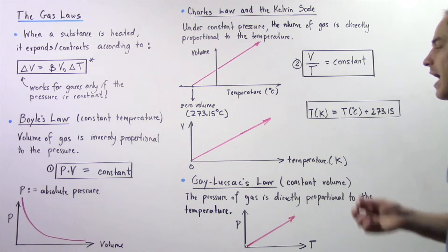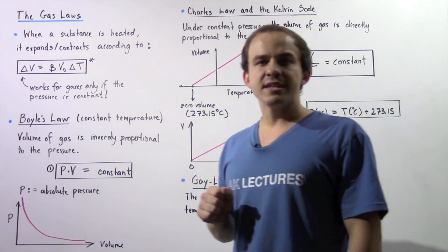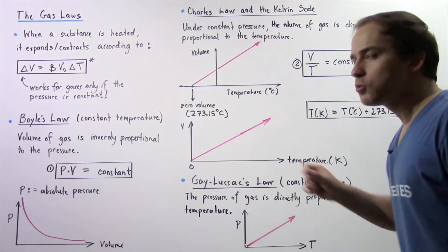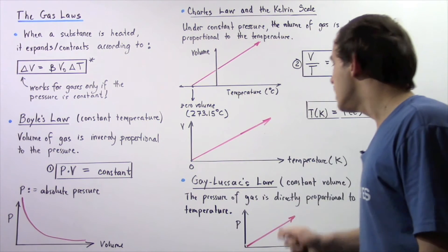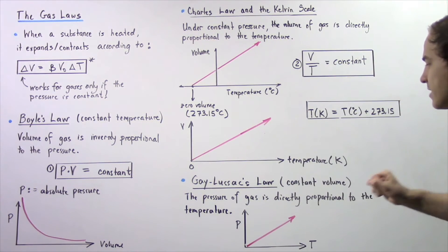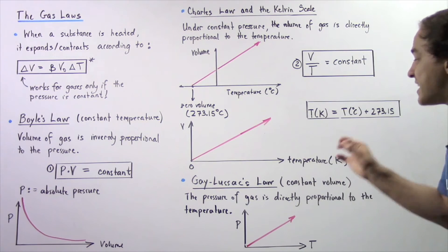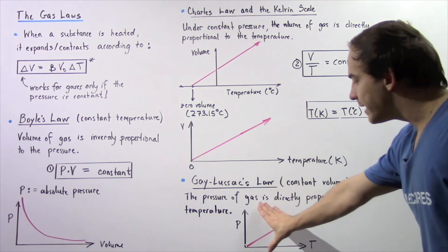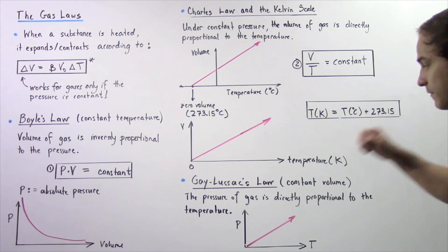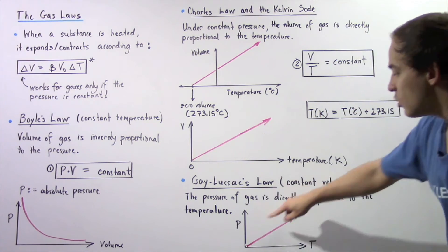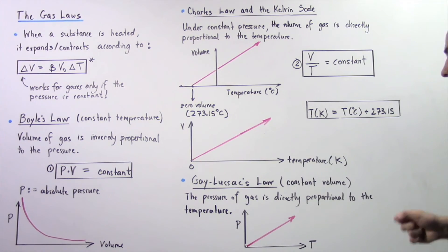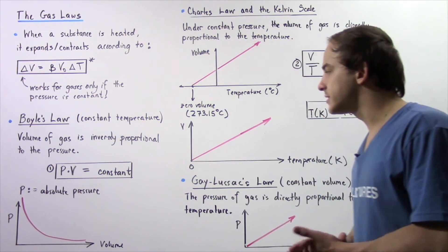Finally, let's move on to the third law known as Gay-Lussac's Law. Gay-Lussac's Law states that if our volume is assumed to be constant, the pressure of a gas is directly proportional to the temperature of the gas. Our pressure divided by our temperature is equal to a constant. On the graph, temperature lies along the x-axis in Kelvin and pressure along the y-axis. If we increase the pressure, our temperature increases, and likewise, if we increase the temperature, our pressure increases by that same amount.